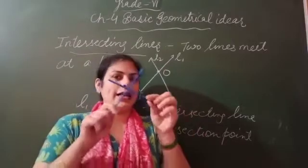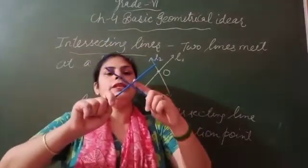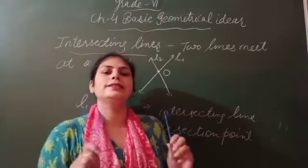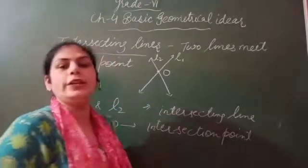And in alphabet X, there are two lines - this one and this one. They meet at this point. These are intersecting lines, and where they meet is called the intersection point.